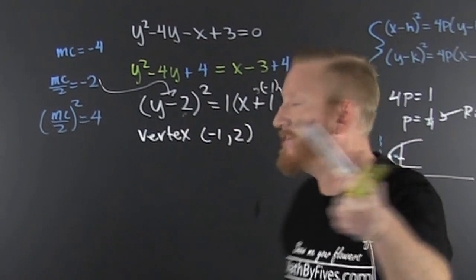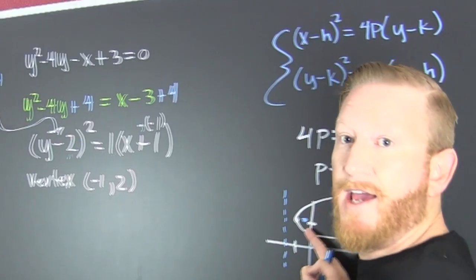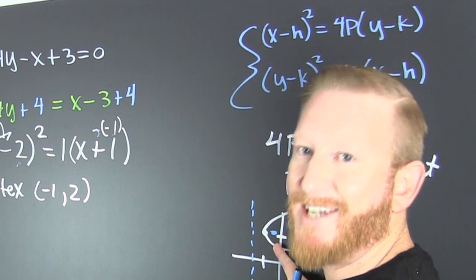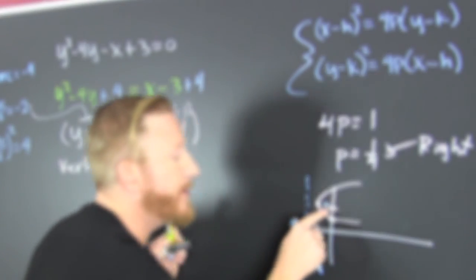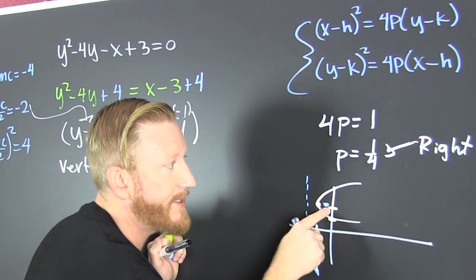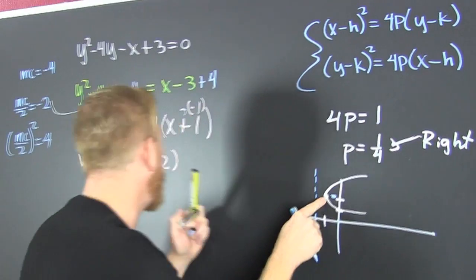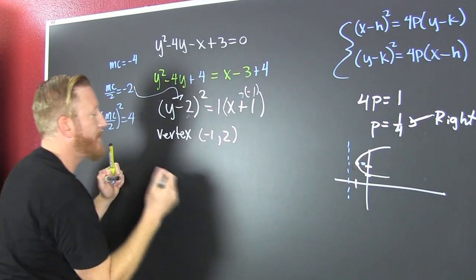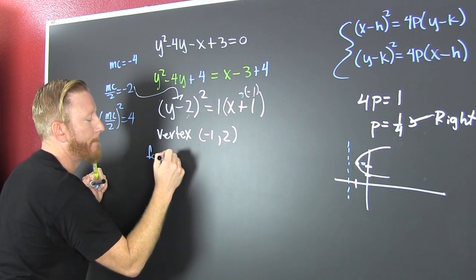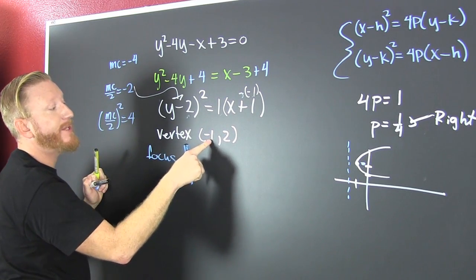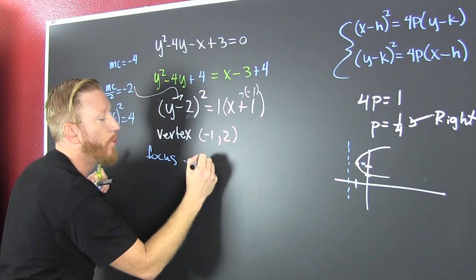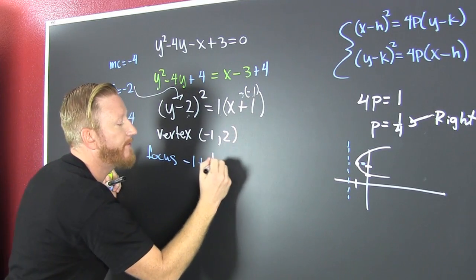What am I changing? I'm changing my x. Focus. The focus is to the right, so I'm going to add my p to the x value. So if I'm going to get my focus, I'm going to add it to the x value. So minus 1 plus 1 fourth.